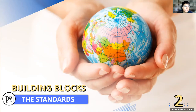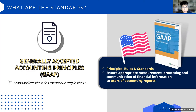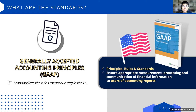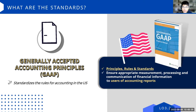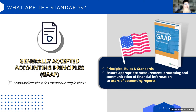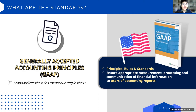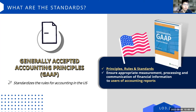Moving to the second building block: standards. What are standards? We call them Generally Accepted Accounting Principles, or GAAP. They are the principles, rules, and standards to ensure appropriate measurement, processing, and communication of financial information. In order to standardize how we report accounting, we have standard setting bodies and concepts — and we call this GAAP. For the US, GAAP standardizes the rules for accounting in the US.